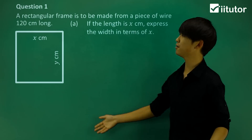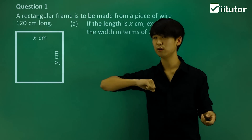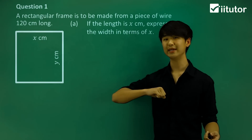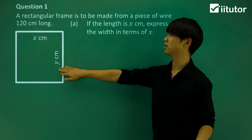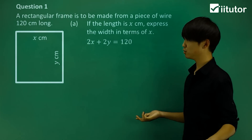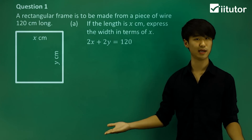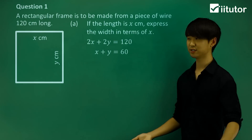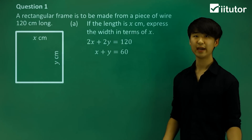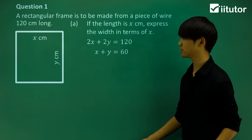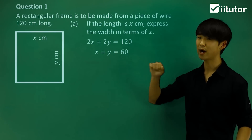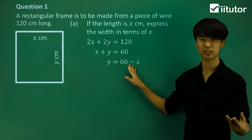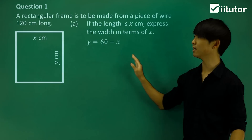What do we know? We know that this rectangular frame is made of 120 centimeters of wire, so the perimeter is 120. The perimeter is 2x plus 2y equals 120. Dividing everything by 2 gives us x plus y equals 60. Since we want y, the width, in terms of x, we make y the subject by moving x to the other side: y equals 60 minus x.